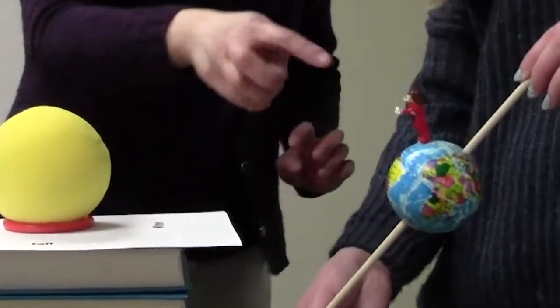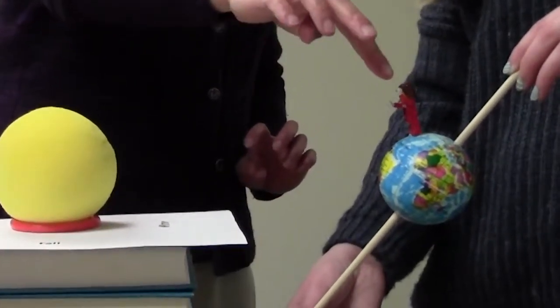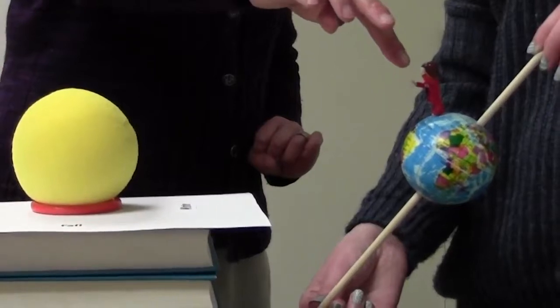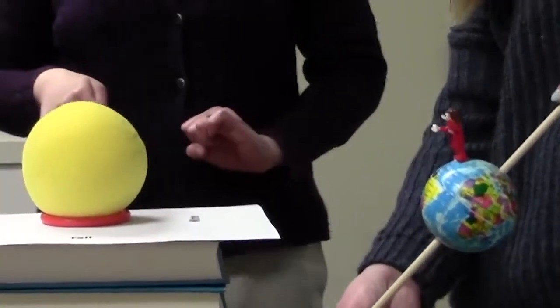So this arm is kind of showing where the sun is in the sky during the summer, and this is where the sun is in the sky during the winter.